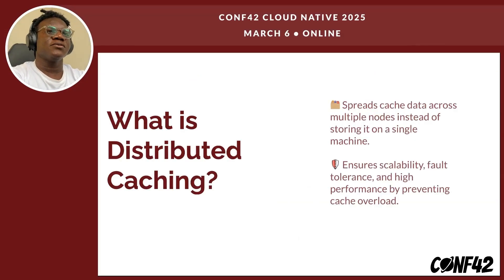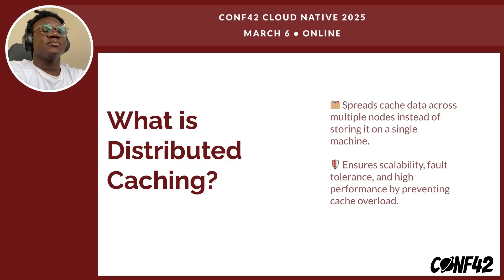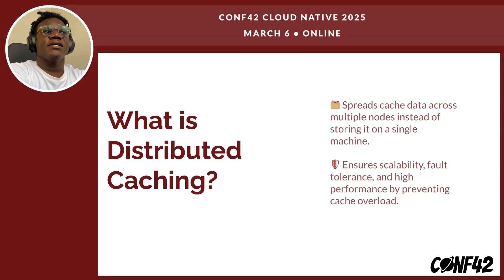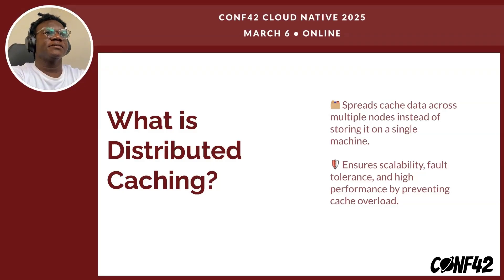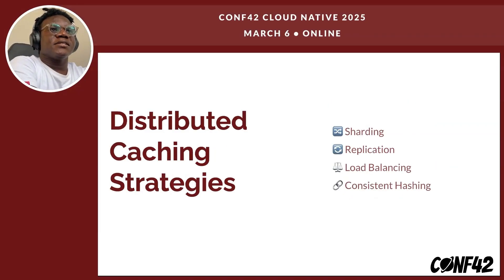As the application scales and grows over time, a single cache instance isn't enough to manage the load or your caching demand. This is where distributed caching comes in. Distributed caching spreads cache data across multiple nodes instead of storing it on a single node or machine, ensuring scalability, fault tolerance, and preventing cache overload. There are different strategies for distributed caching — sharding, replication, load balancing, consistent hashing, and others.